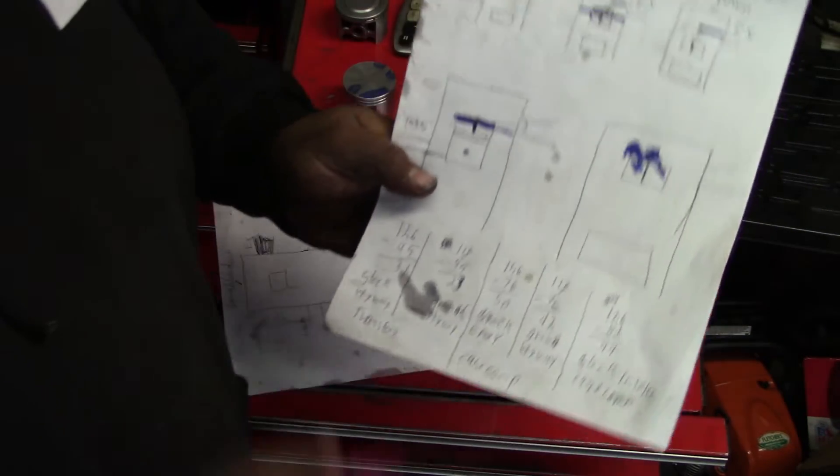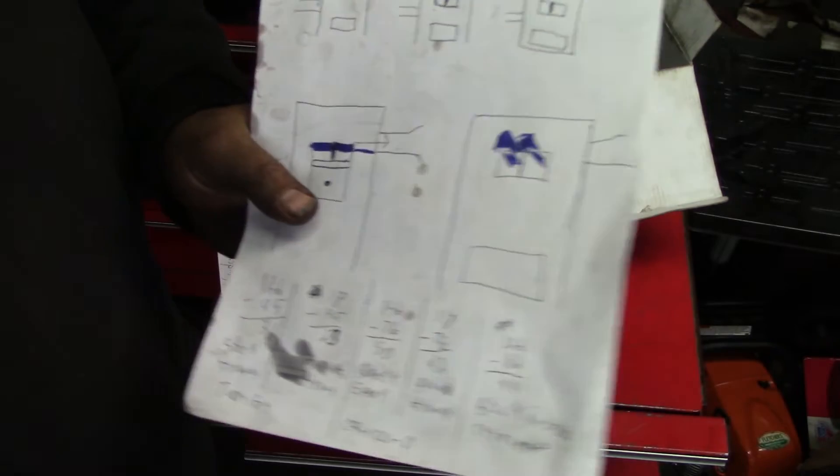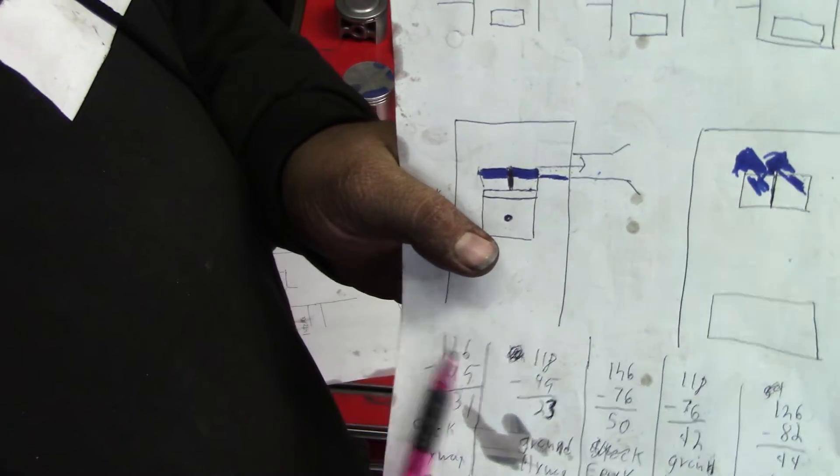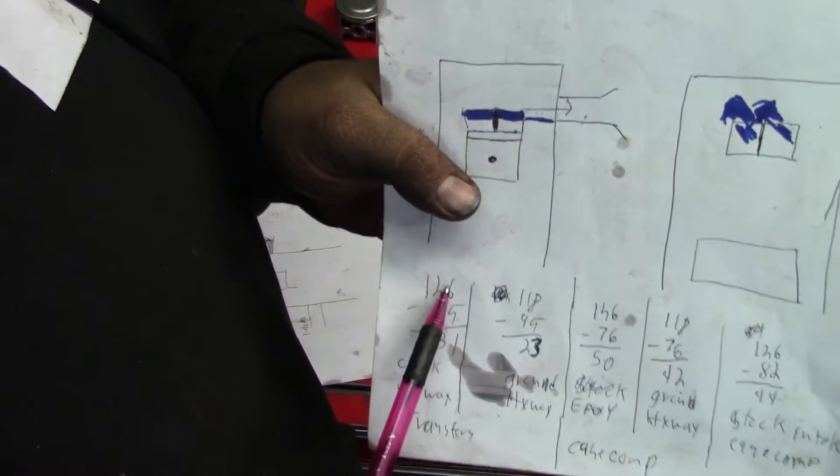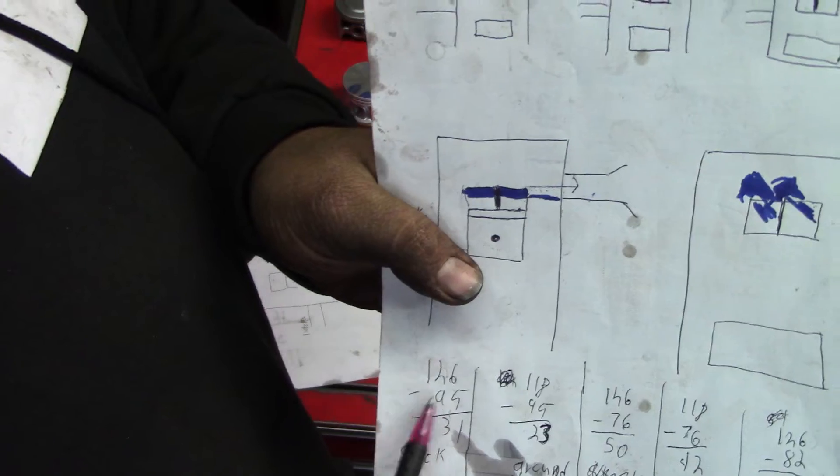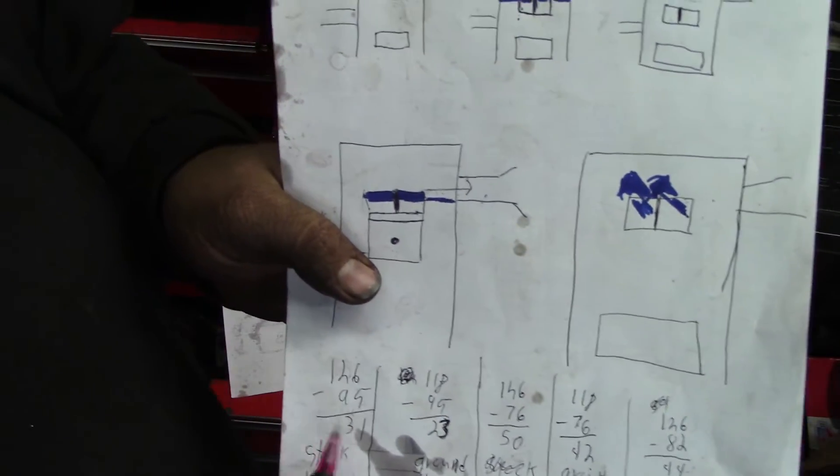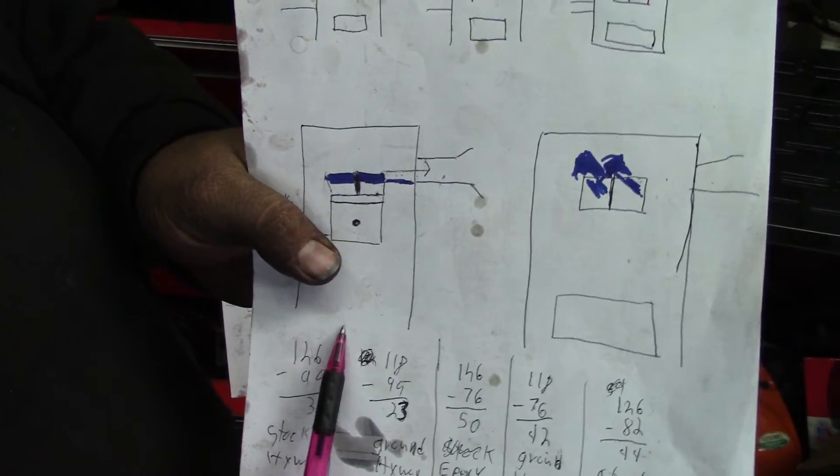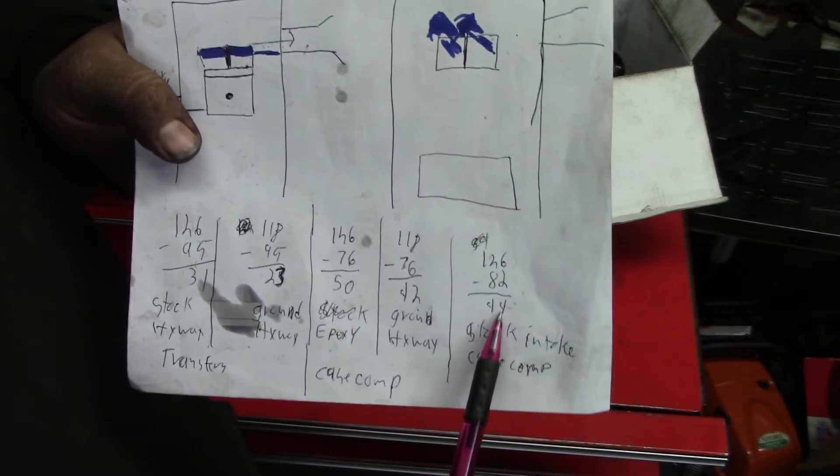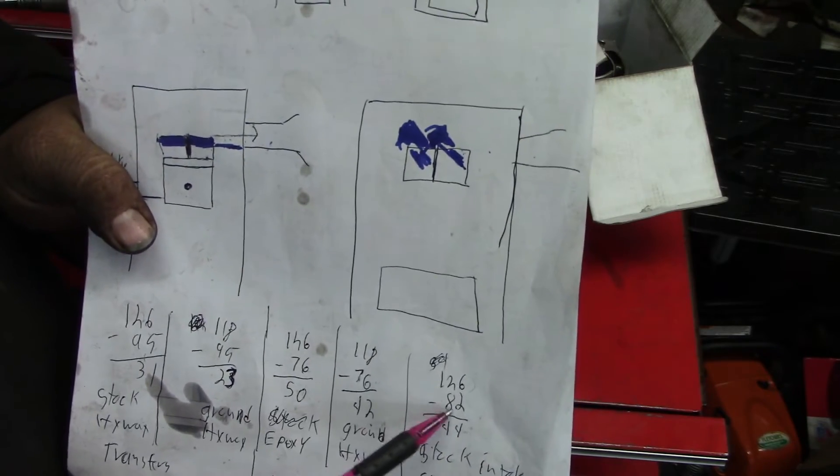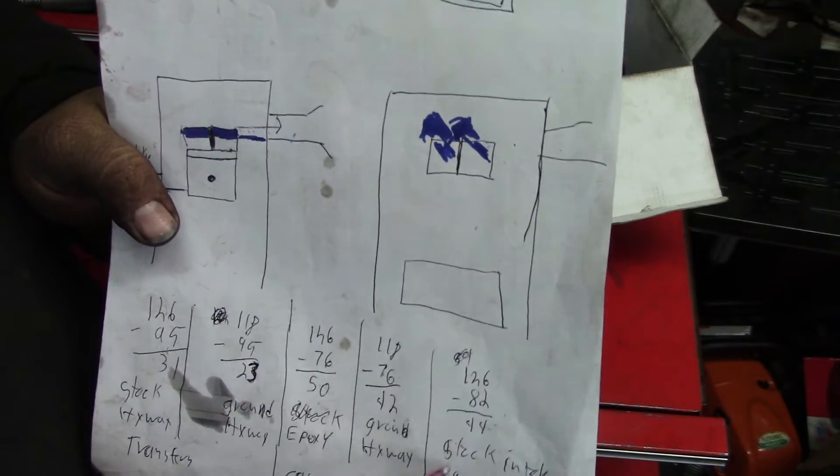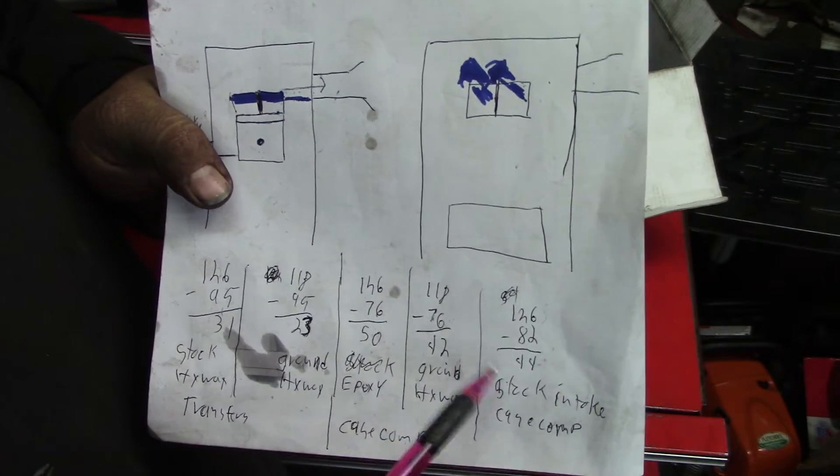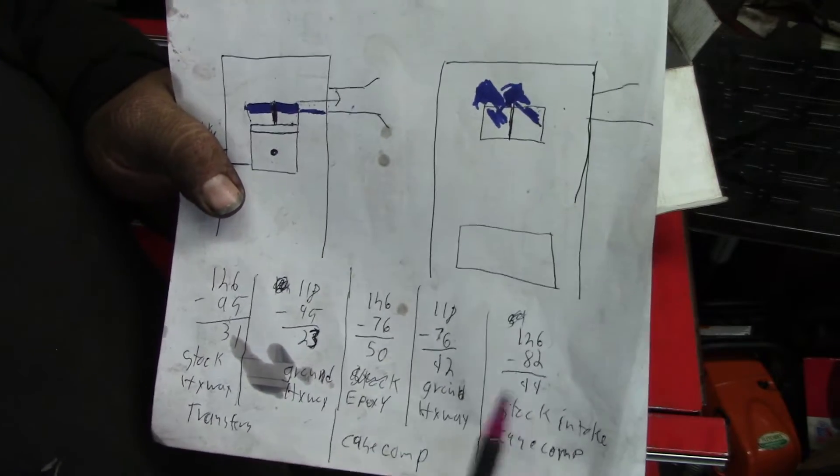Right here, say 126 is where my 660 was out of the box. 95 is my exhaust port, which means like 31 degrees of blow down. 82 is my intake. So to figure out case compression, you have 126 minus 82 gives me 44 degrees of intake or case compression.